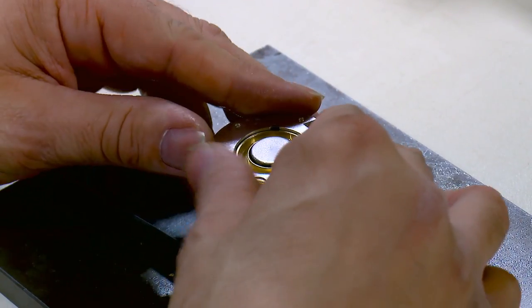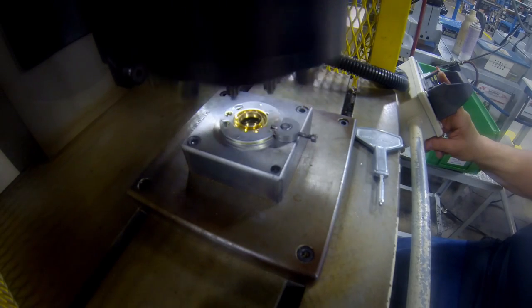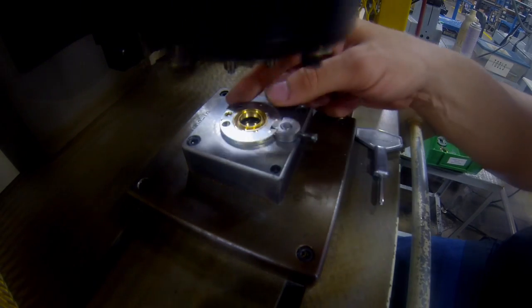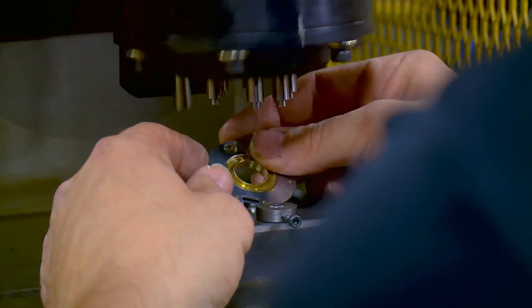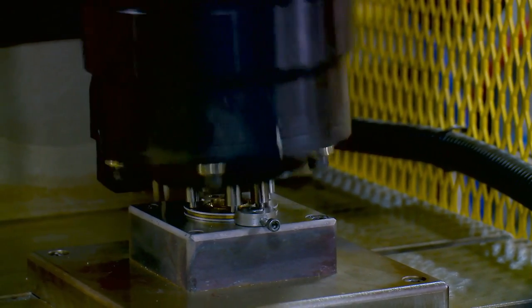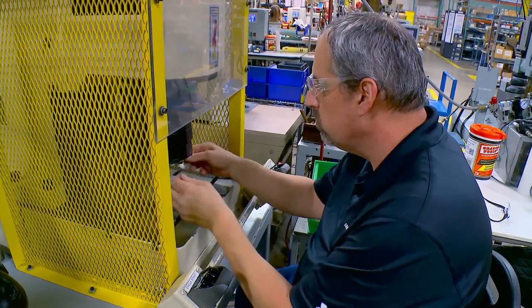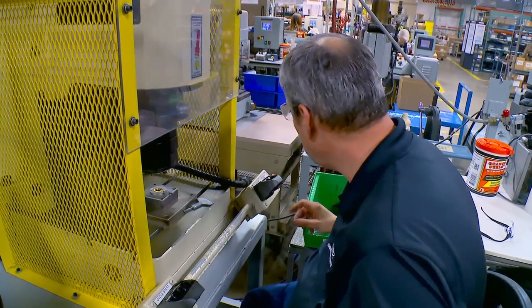He carefully connects a pair of casings with six tiny rivets to make a wheel. Securing these manually would take about a minute per wheel. So this spinning machine provides a quick fix.